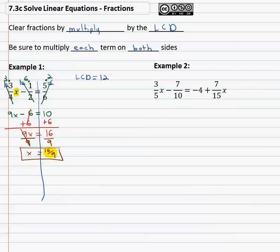Let's look at another example. In the second example we've got several fractions, and we've got something that's not a fraction, the negative 4. I often just put it over 1 because it really is a fraction. And then we can identify the least common denominator to clear the fractions. We've got denominators of 5, 10, 1, and 15. Those all evenly go into the number 30.